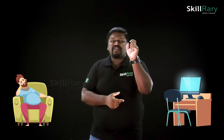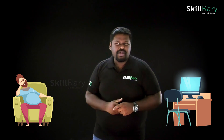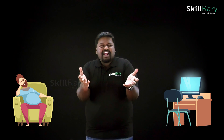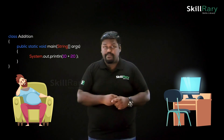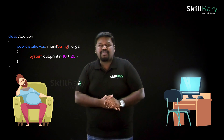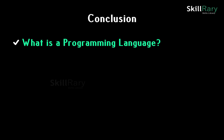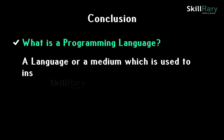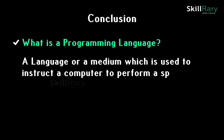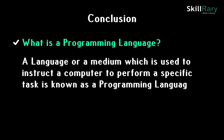We have a language designed in such a way that a computer can understand — such a language is known as a programming language. Smith just needs to learn a programming language and write the instructions using it. Once the instructions are ready, he gives them to the computer, which will perform the addition of the two numbers and produce the result. Therefore, the conclusion is simple: a language or medium used to instruct a computer to perform a specific task is known as a programming language.